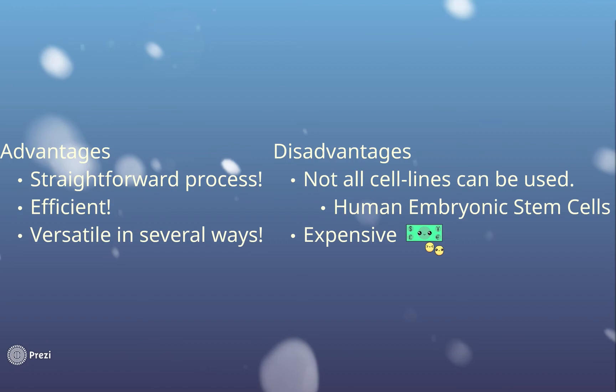As powerful as lipofection is, it has its pitfalls. While lipofection can deliver all types of nucleic acids, this is only possible in select cell lines. Human embryonic stem cells are poor cell lines for lipofection delivery, having a 0% delivery efficiency.